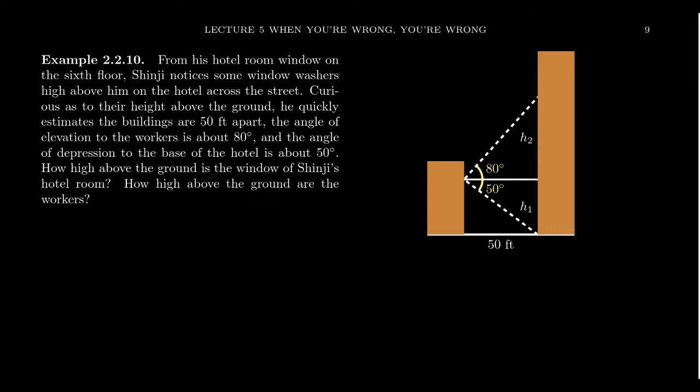So what Shinji first does is he estimates that the distance between the two buildings is going to be 50 feet, which would be the distance between Shinji and the other building as well. Looking upwards from his window to the window washers, he estimates that the angle of elevation would be 80 degrees. And then looking down towards the street level at the base of the other building, Shinji estimates that the angle of depression would be 50 degrees. So using these measurements, how high up would the window washers be by Shinji's estimates?